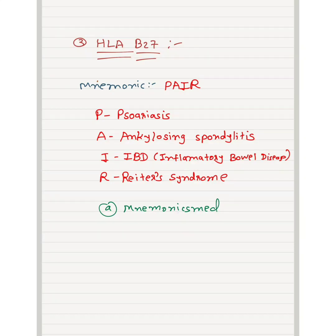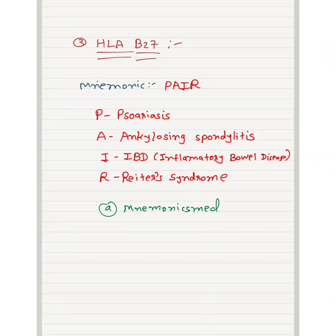Now we will learn about HLA-B27 — it is the most important. The mnemonic is very easy: PAIR. P means Psoriasis, A means Ankylosing Spondylitis, I means Inflammatory Bowel Disease, R for Reiter's syndrome. Just remember the mnemonic PAIR.